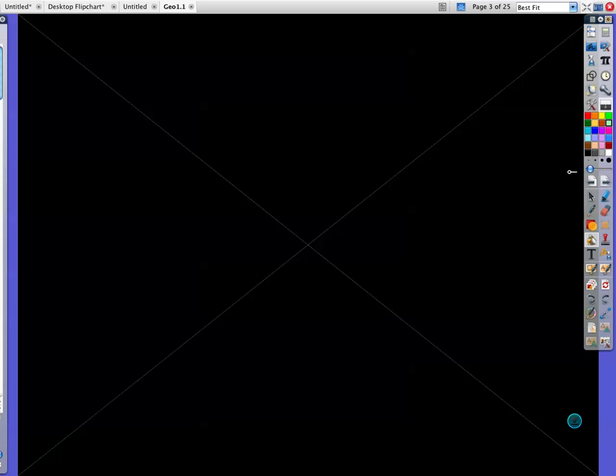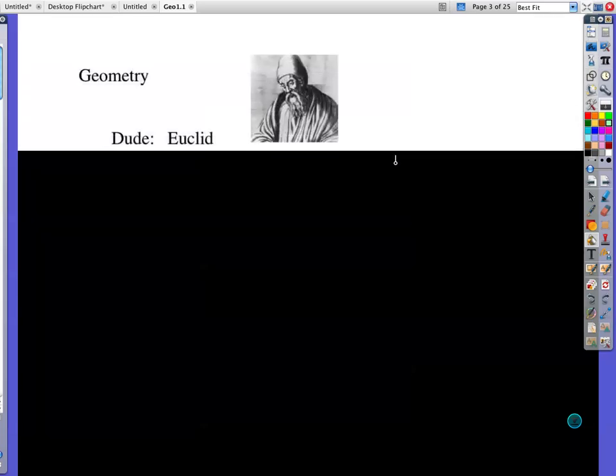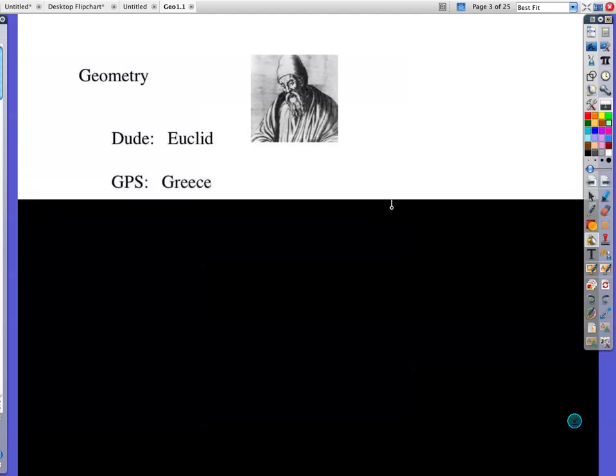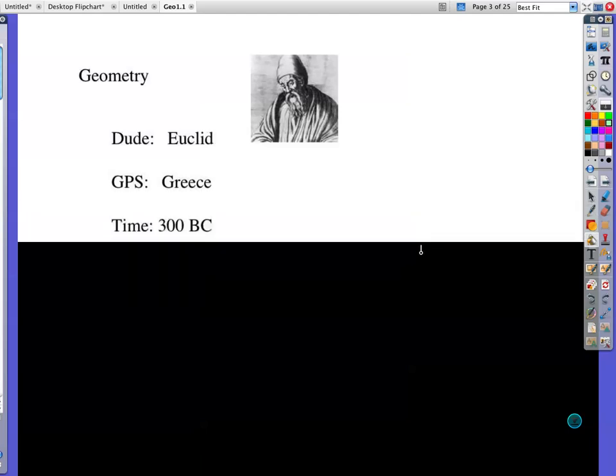Some things that you might be interested about when it comes to some history of geometry. This picture here is of this guy named Euclid, and he's considered to be the father of geometry, so you can thank this entire semester to him. His location, his GPS, was Greece. He lived about 300 BC.